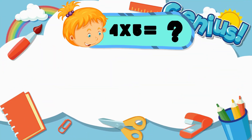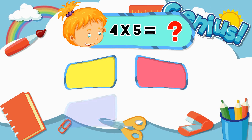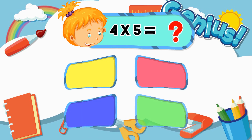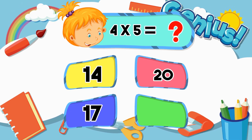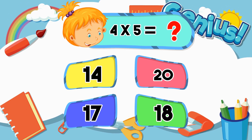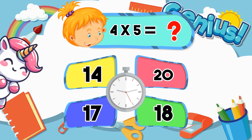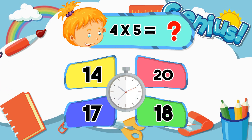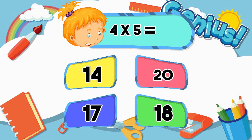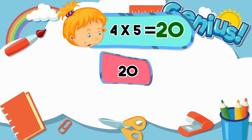What is 4 times 5? Options: 14, 20, 17, 18. Answer: 20.